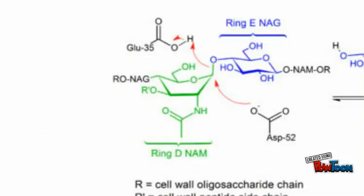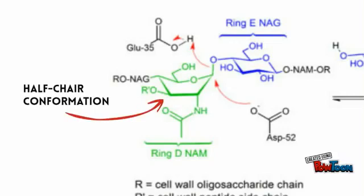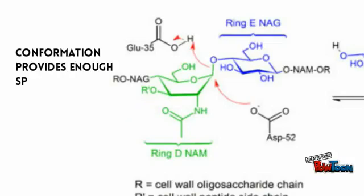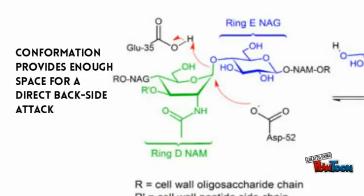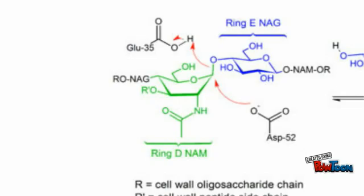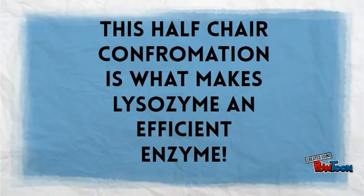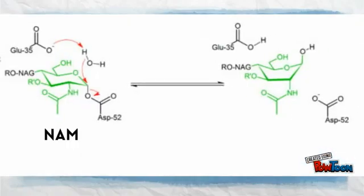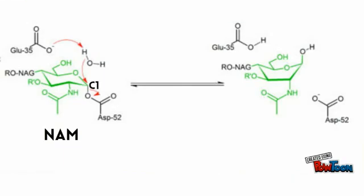Note that NAM has been forced into a half-chair conformation by the enzyme. It's really because of this unstable conformation that aspartate is able to be such an efficient nucleophile, since it provides enough space for a direct backside attack. Without this, it would be much more unfavorable to break the bond, and it's because of this conformational change that lysozyme is so widely used by organisms. Going back to the mechanism, after the intermediate is produced, water is finally introduced, and it acts as a nucleophile to attack the carbon-1 of NAM. This breaks the bond between the residue and aspartate, and it returns the enzyme back to its relaxed state.